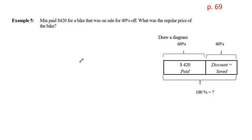Example 5 is very similar to example 4, except that the numbers are just presented a little bit differently. Min paid $420 for a bike that was on sale for 40% off. What was the regular price of the bike? We know, obviously, that the regular price of the bike is going to be higher than the $420 that she spent. This diagram can show us that she paid $420, which is 60% of the total price. She saved 40% of the total price. And, of course, the total price being 100%.